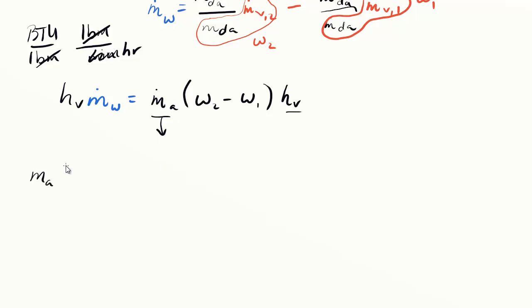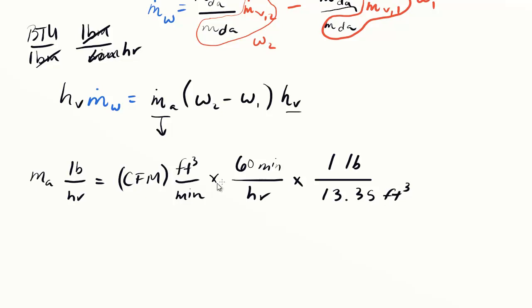The mass flow rate of air in pounds per hour is equivalent to a CFM value, feet cubed per minute. We need to get from feet cubed per minute to pounds per hour for air. There are 60 minutes per hour, and at standard air conditions, we have one pound of dry air per 13.35 feet cubed. Canceling units, what's left over is the CFM value multiplied by 4.5.